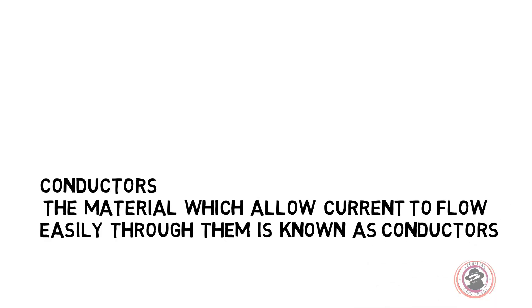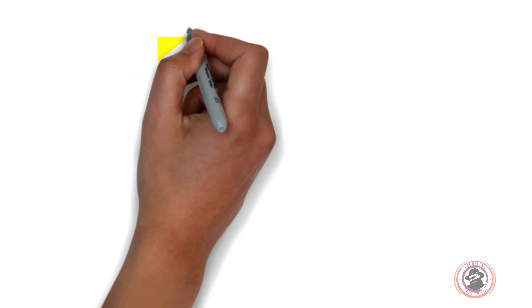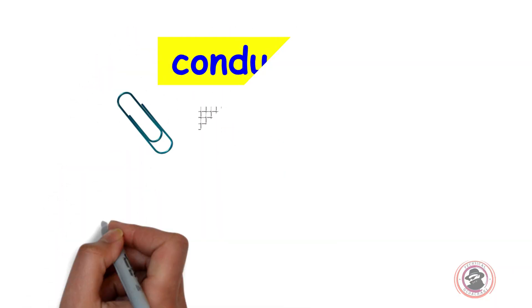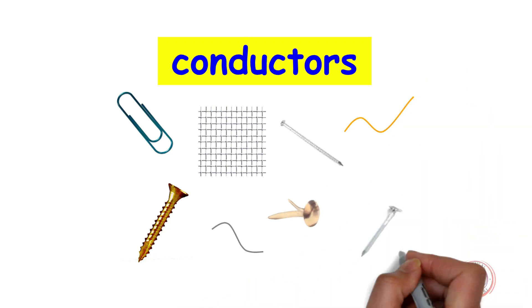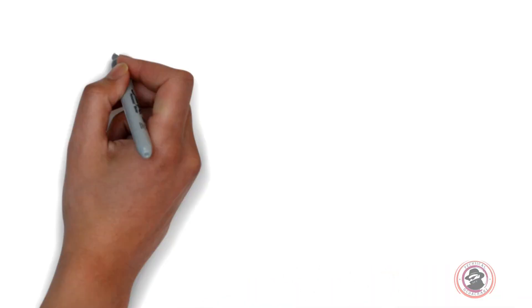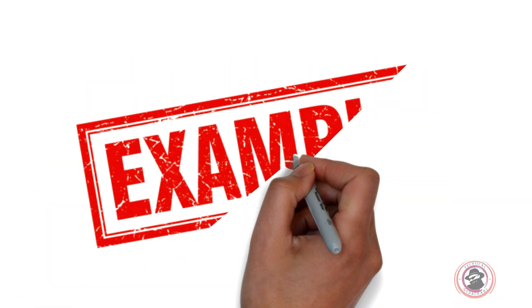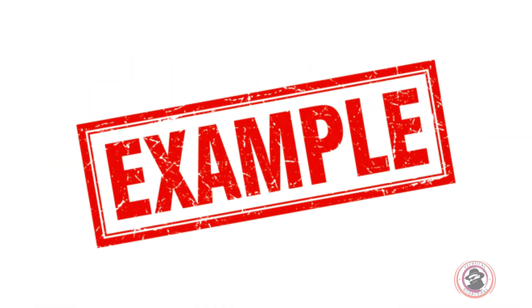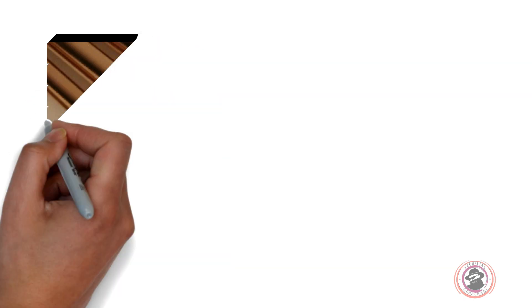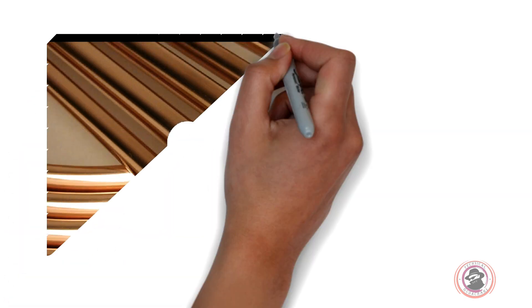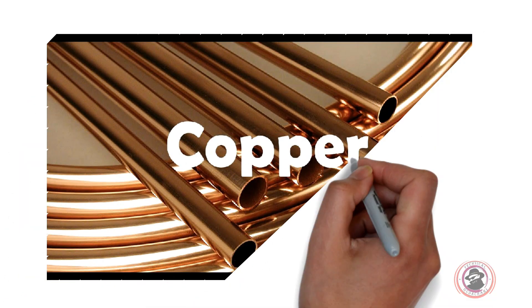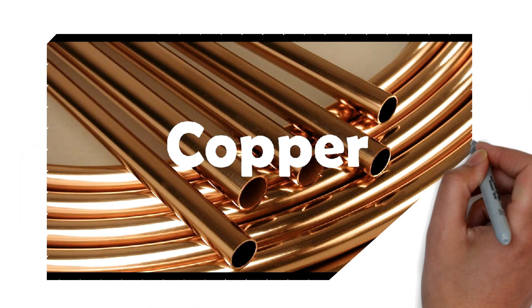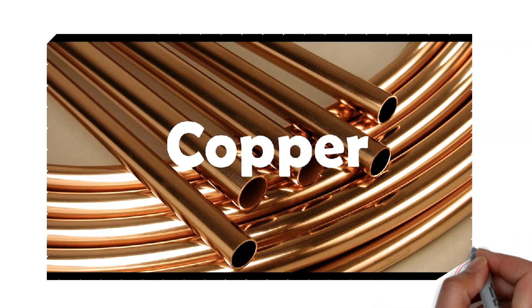If it comes to a conductor, electrons are easy to flow. For example, copper is a good conductor.